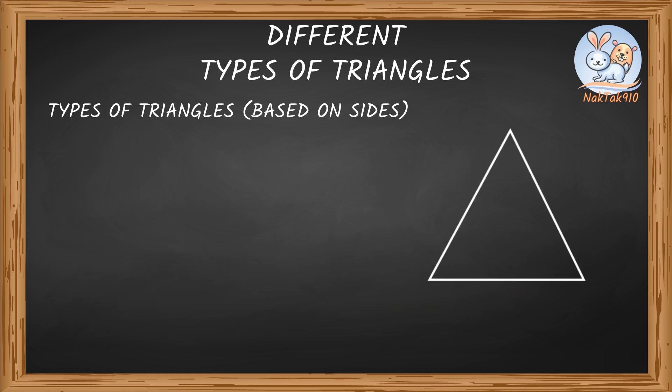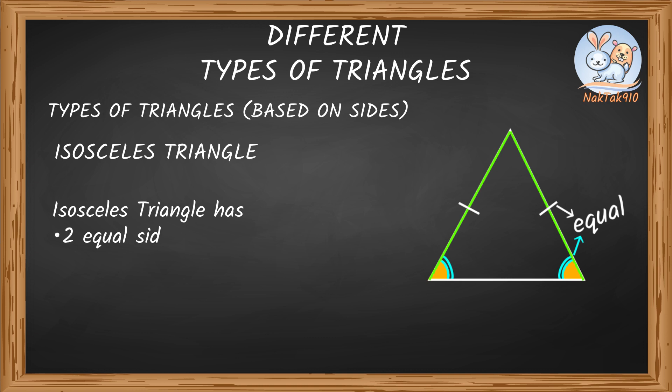Look at this triangle. It has two equal sides and two equal angles. So this is an isosceles triangle. This symbol means angles are equal. An isosceles triangle has one, two equal sides, two, two equal angles. Yep, that's right. Do you think this is an isosceles triangle? Two sides measure three centimeters and two angles measure 65 degrees. So yep, this is an isosceles triangle.